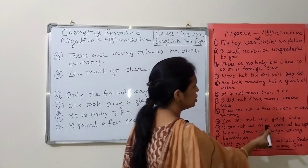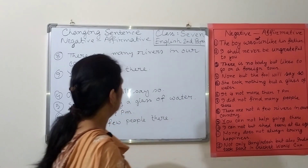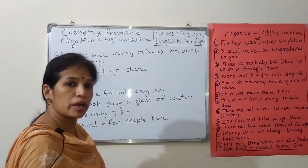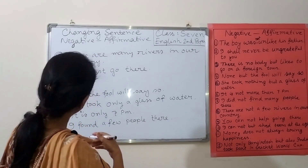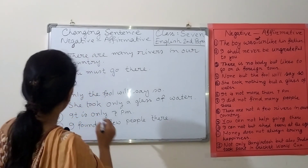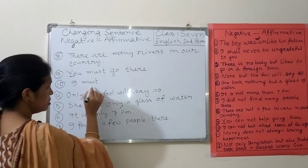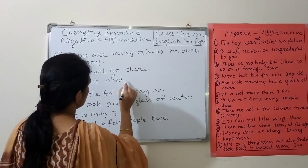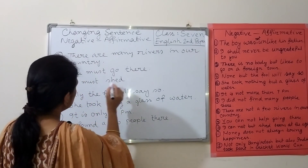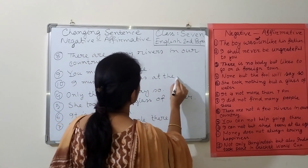Number ten: 'I cannot but shed tears at the sight.' The affirmative will be: here we can see 'cannot but,' and as in the previous exercise, we use the modal auxiliary verb 'must.' Instead of 'cannot but' we use 'must,' and there will be no change of the main verb. The affirmative sentence is: 'I must shed tears at the sight.'